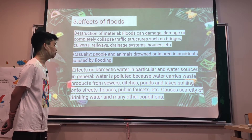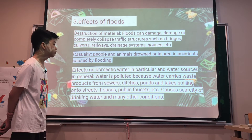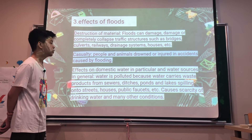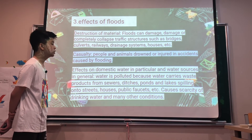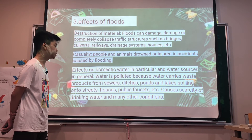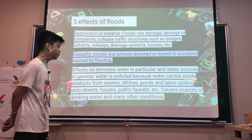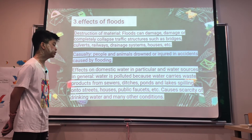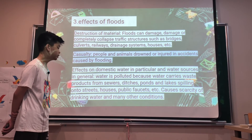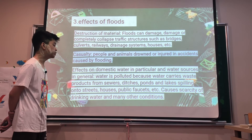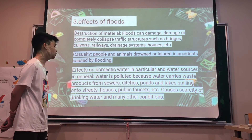Effects on domestic water supply in particular and water sources in general: water is polluted because it carries waste products from sewers, ditches, ponds, and lakes, spilling onto streets, houses, and public faucets, causing scarcity of drinking water and many other health conditions.